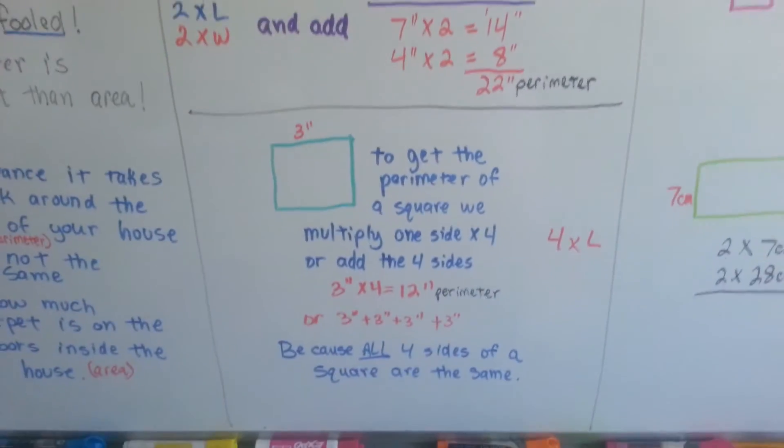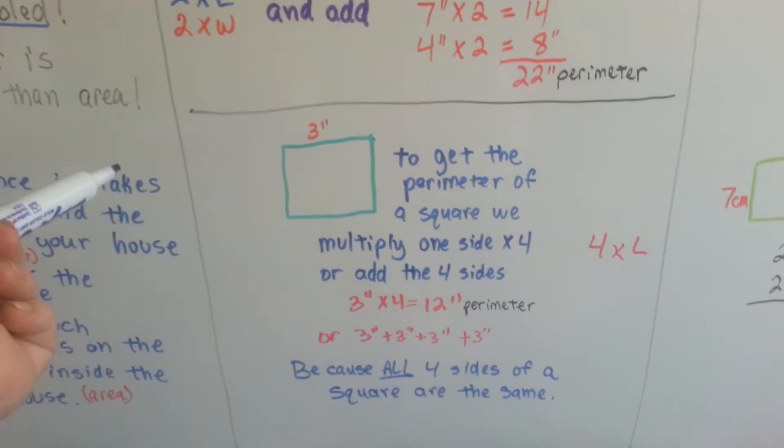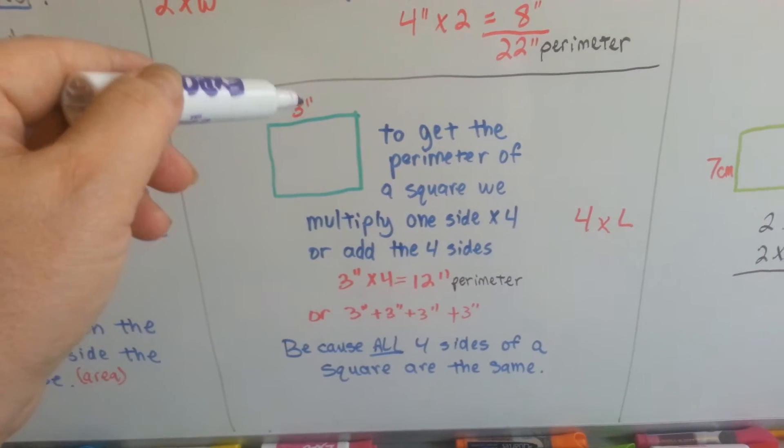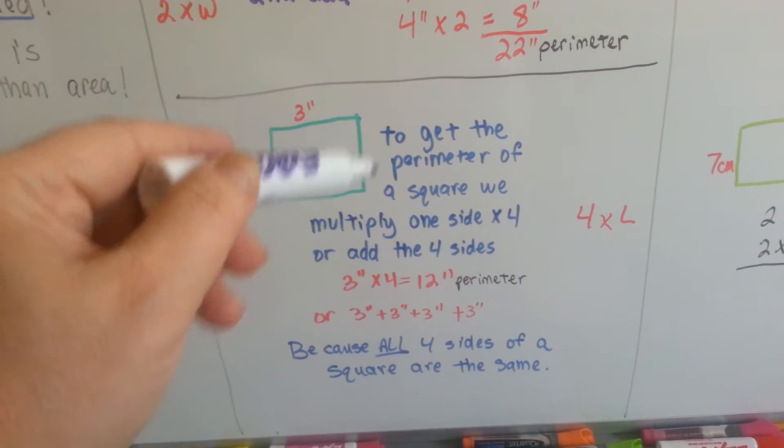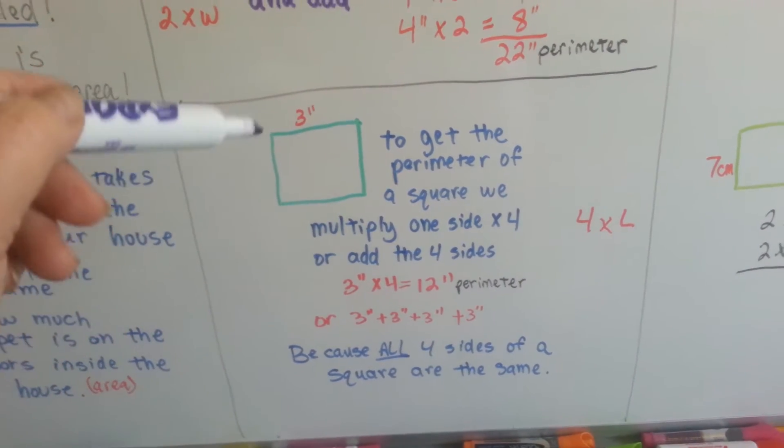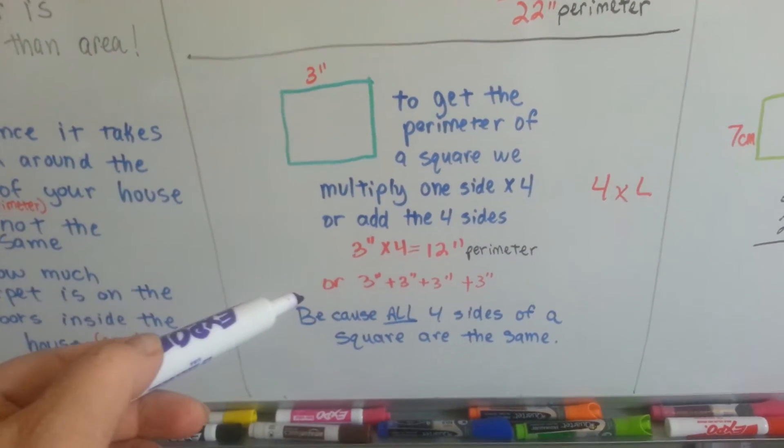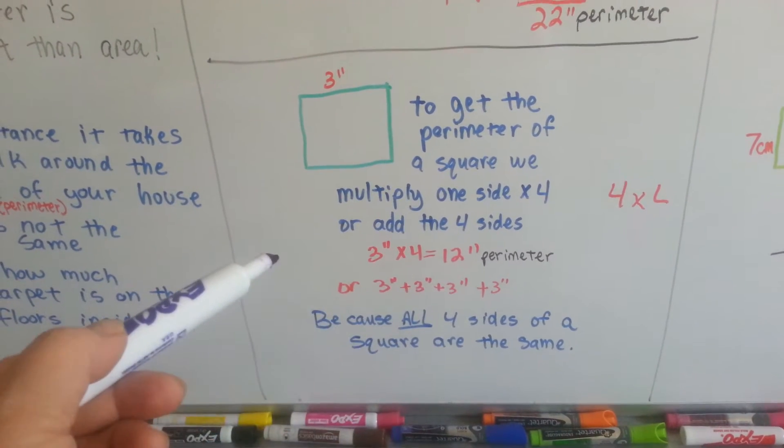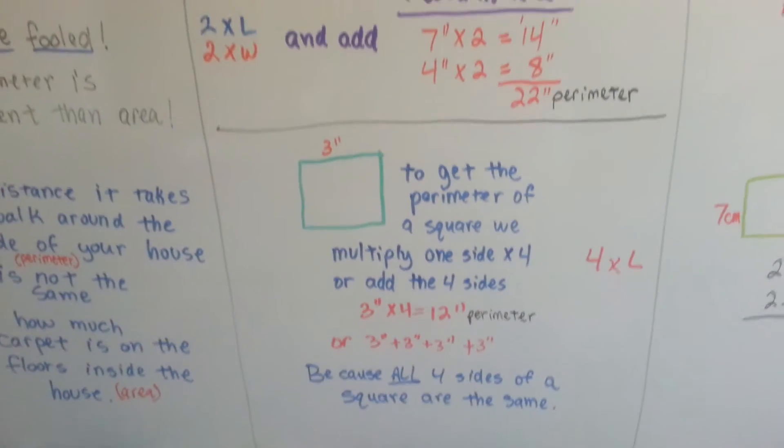How about a square? Well, one of the traits of a square is that all 4 sides are equal, right? So to get the perimeter of a square, we just multiply one side by 4. If this side is 3 and it's a perfect square, then all the sides are 3. We can either add 3 four times or just say 4 times 3, 4 times the length. See? 4 times 3 is 12, so we know the perimeter is 12. Because all 4 sides of a square are the same, alright?